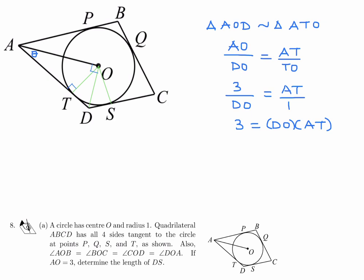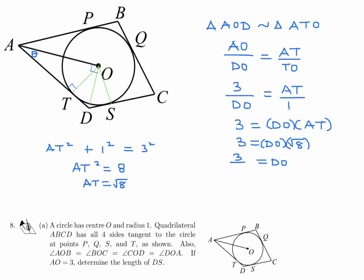Now where do we go from here? Well, Pythagoras will definitely help us. I'll use triangle ATO first. AT squared plus TO squared, which is 1 squared because that's the radius, is equal to AO squared, which is 3 squared. So AT squared equals 9 minus 1, which is 8, so AT is root 8. So I can plug that back in: DO times root 8 equals 3, and therefore DO equals 3 over root 8.